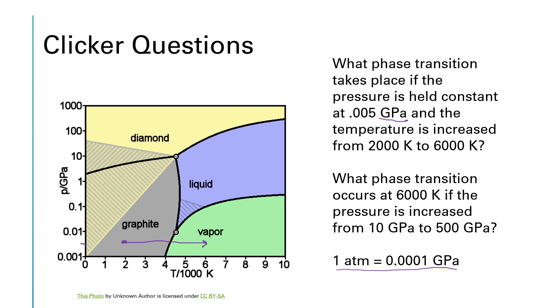So in that case, we're going to have graphite, which is a solid transitioning to the vapor phase. And so we have a solid turning into a vapor. So that's going to be sublimation.